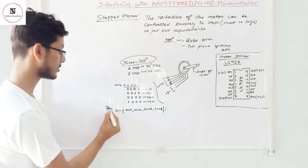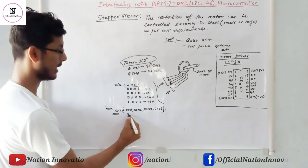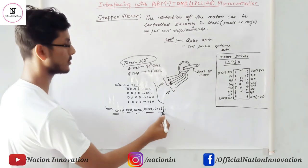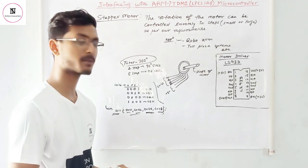So for the clockwise rotation, we will make an array in the program and pass 01, 02, 04 and 08. Rotation of our stepper motor will be clockwise.